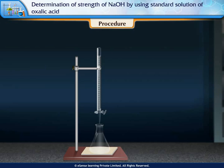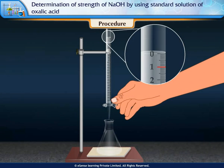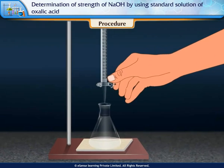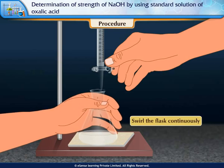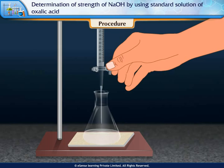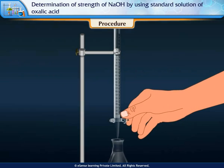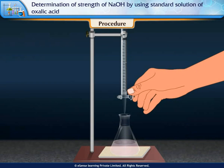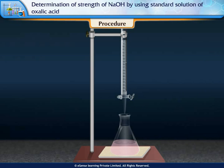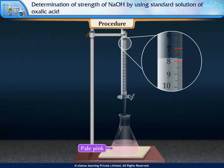For the pilot reading, add 1 cm³ of the burette solution at a time while swirling the flask continuously. Record the reading at which the color of the solution changes to light pink. There is no color change until 7 cm³ of burette solution is added. After adding 1 more cm³, the color changes to pale pink. Therefore, the pilot reading is between 7 cm³ and 8 cm³.